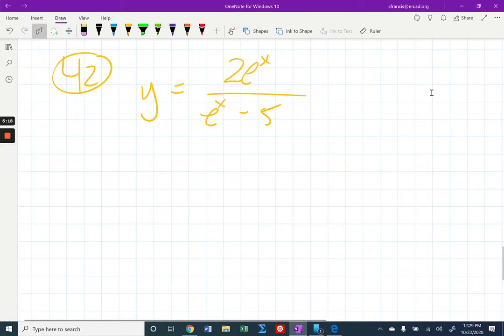For number 42, we want to figure out all the horizontal and vertical asymptotes for the graph of this function. For vertical asymptotes, we have a theorem in our book. It says theorem, not in Stewart's because it's not in our textbook. But it says that if we find places where the denominator is zero and the numerator is not, then that's where we're going to have locations of vertical asymptotes. So you're going to set e to the x minus 5 equal to zero. And then you're going to solve that for x. You should be able to solve that using logs.